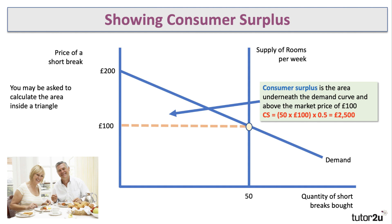We can actually work this out numerically. The area of consumer surplus is half the base times the height: 50 times 100 times 0.5, giving a consumer surplus of 2,500 pounds.